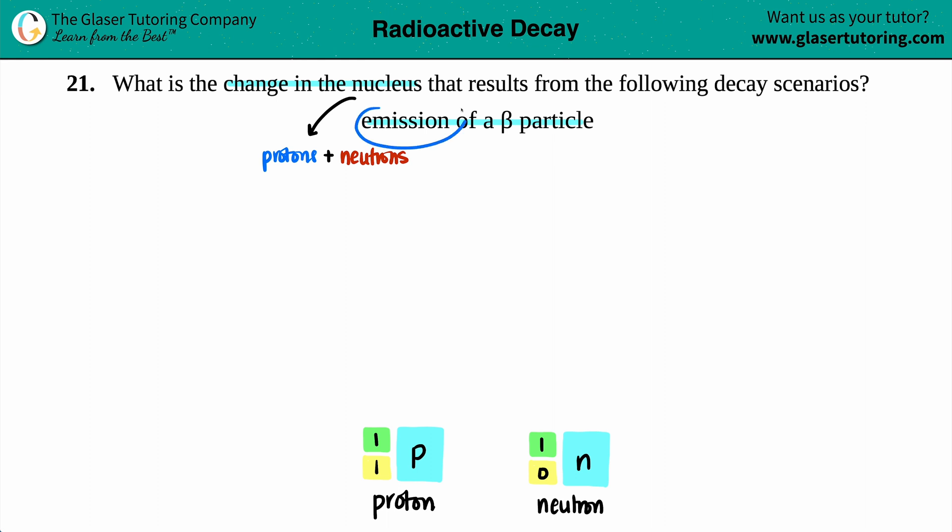Now, they do say that we are undergoing emission. If you are emitting something, just know that whatever they're talking about, it's always going to be in the product side. So in this case, we're undergoing emission of a beta particle, and a beta particle is just a fancy way for saying an electron.